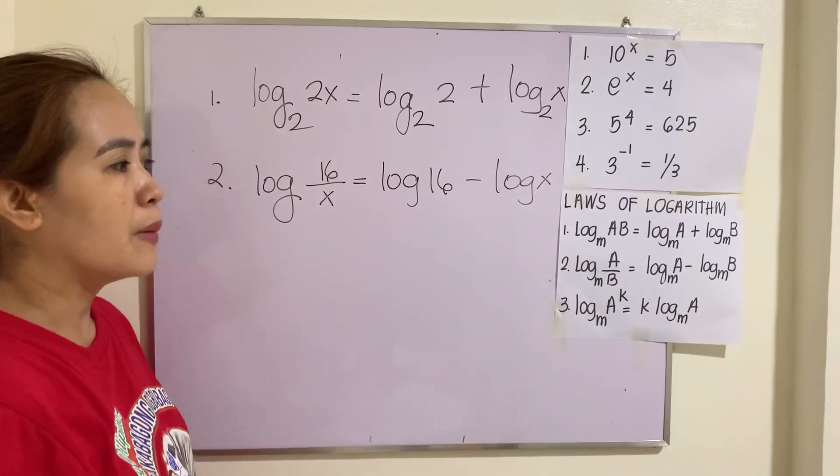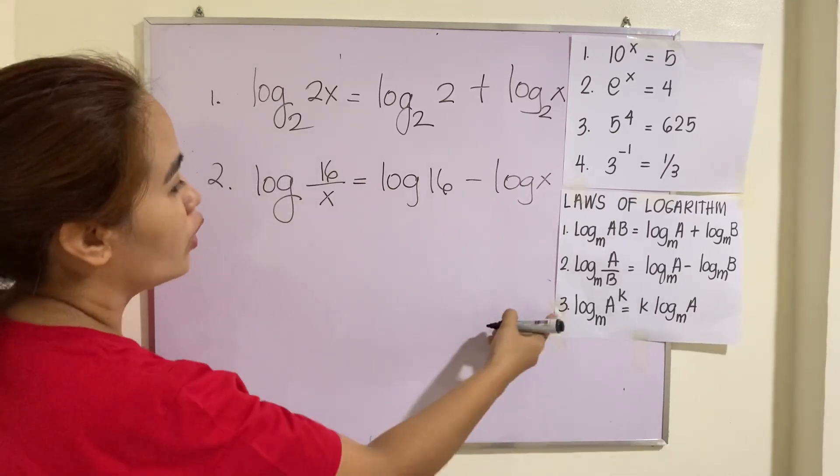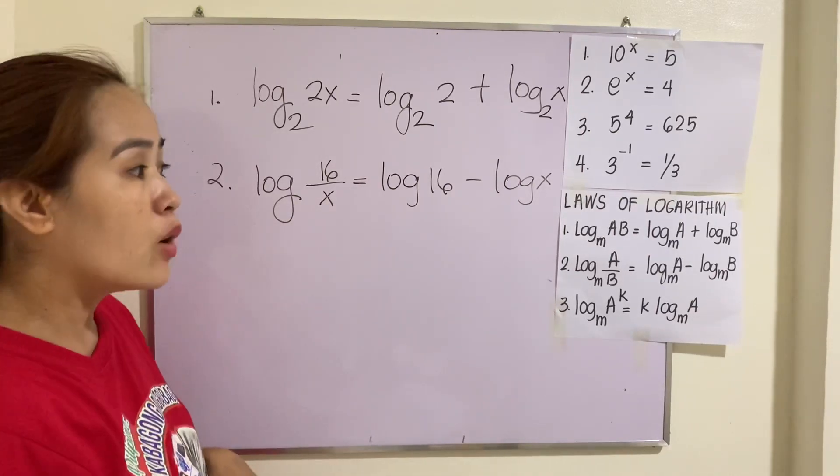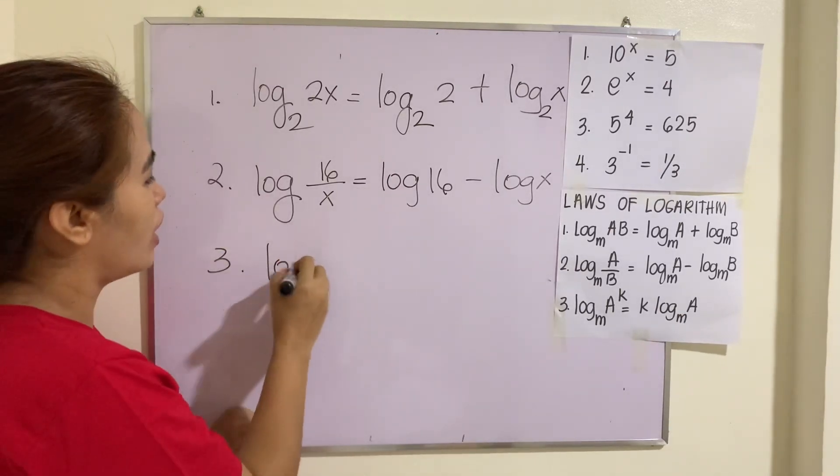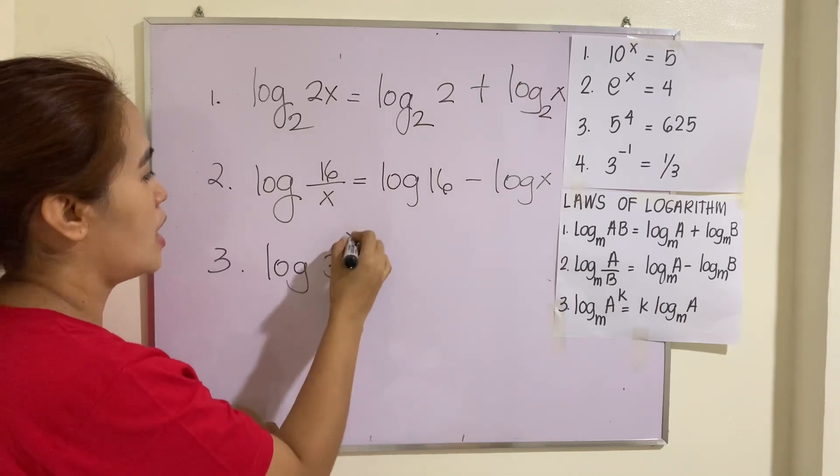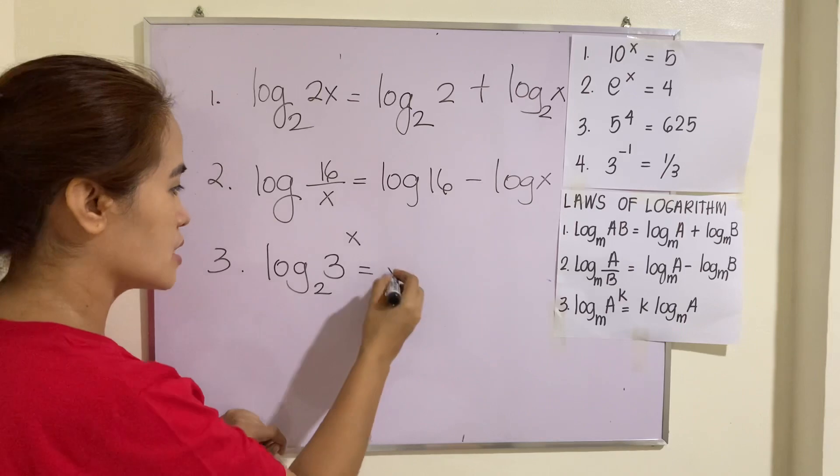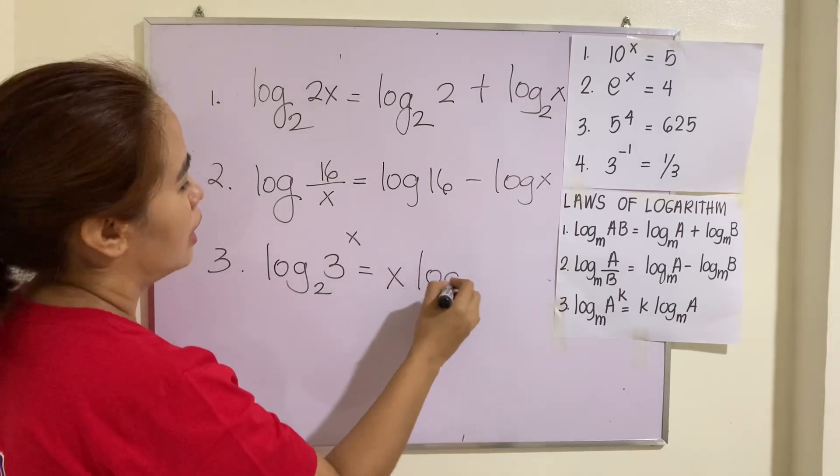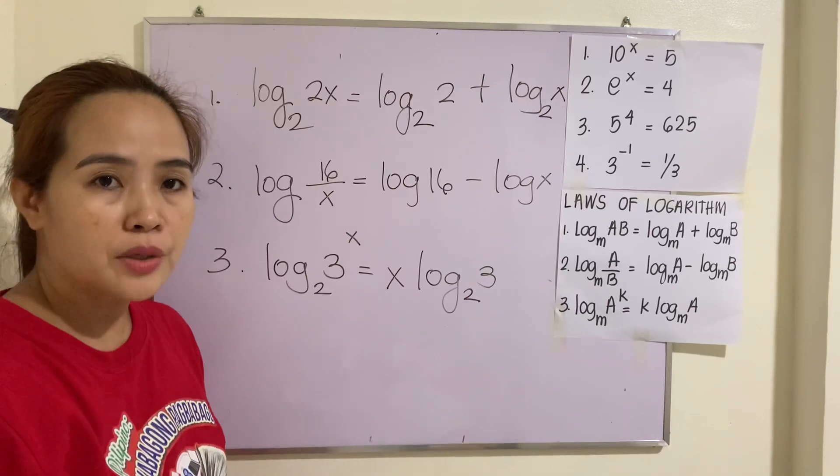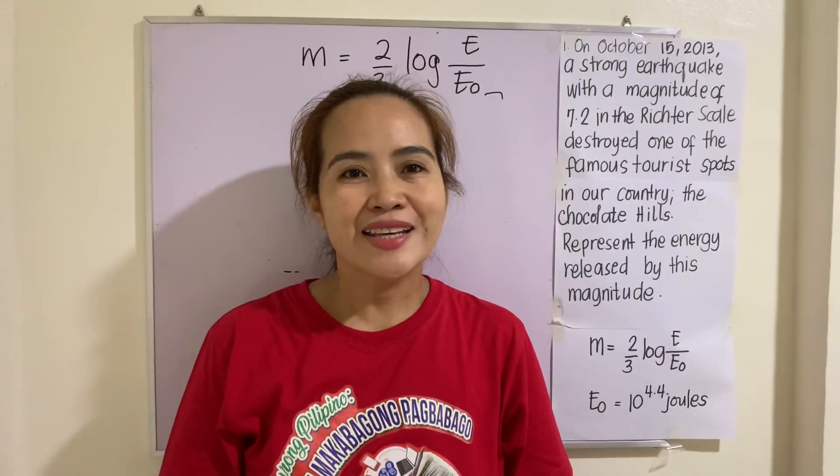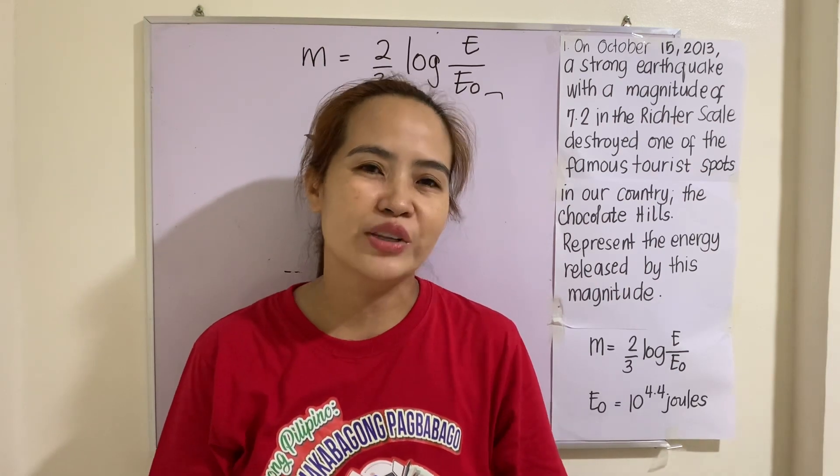So, the third law of logarithm is power. So, how do we do that? Suppose you have log_2(3^x). This one is equivalent to x multiplied by log_2(3). Those are the rules or the laws. Let us go now to representing real life situation involving logarithmic function.